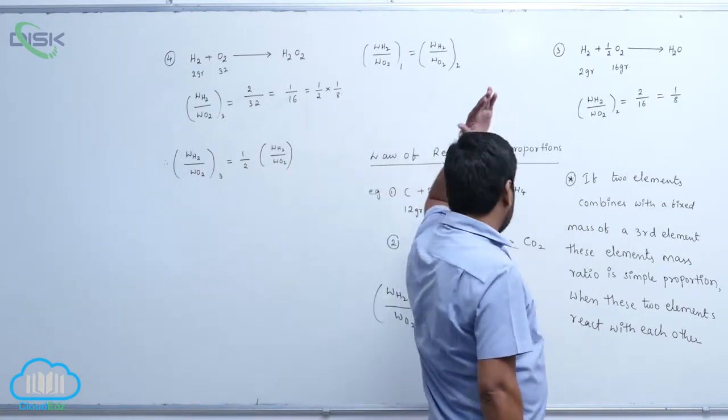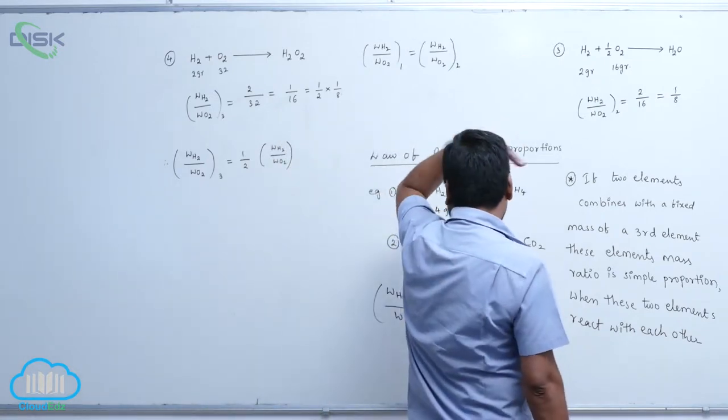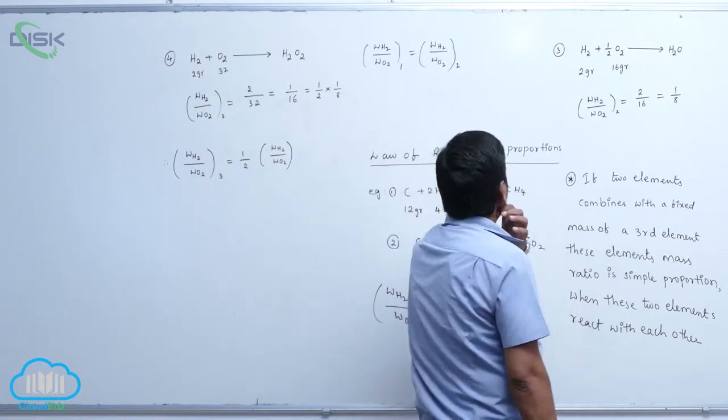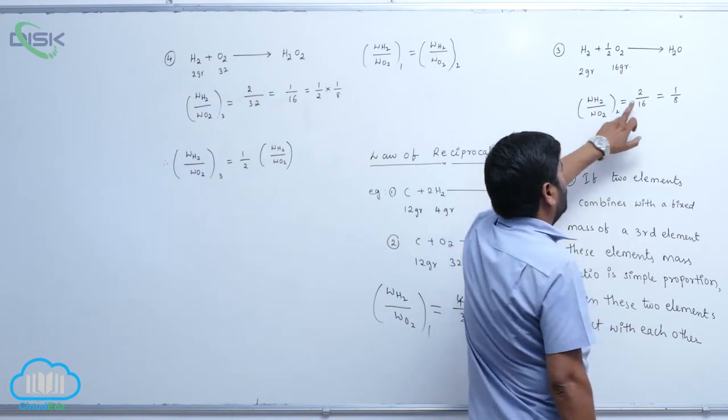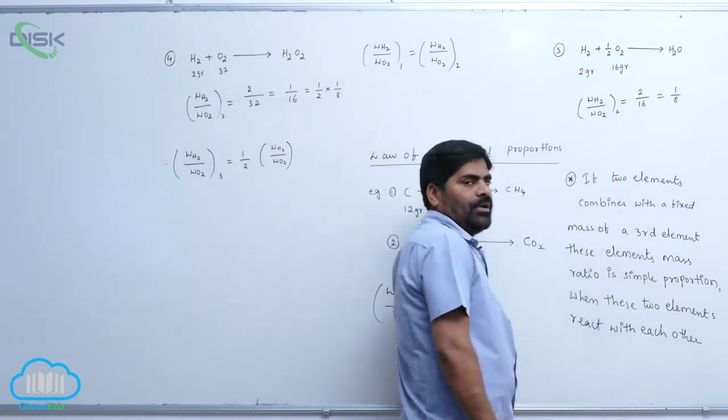In the second process, weight of hydrogen by weight of O2 equals to 2 by 16. This is also 1 by 8.